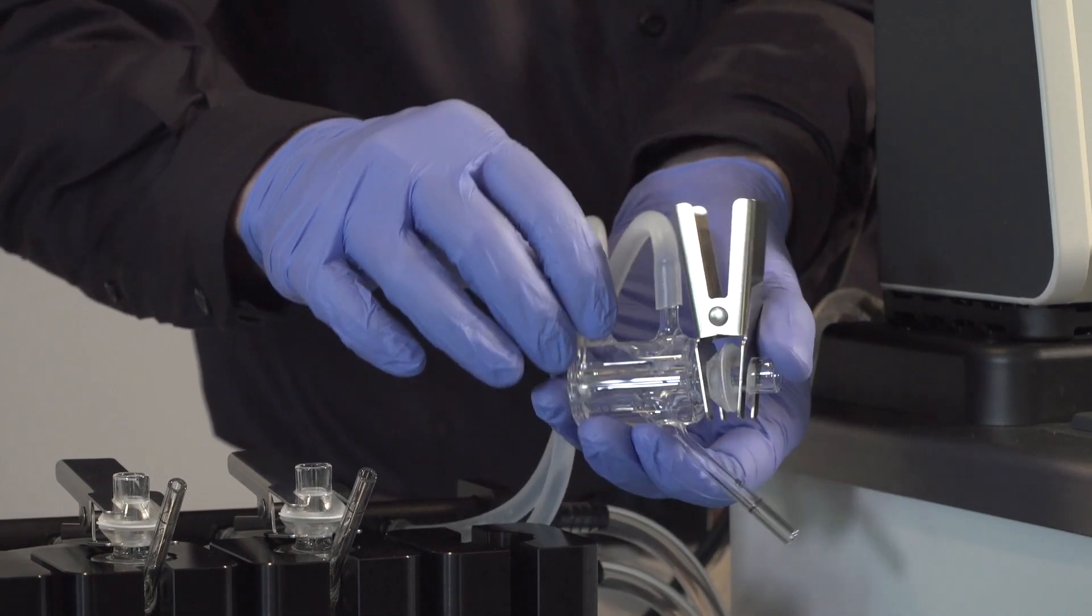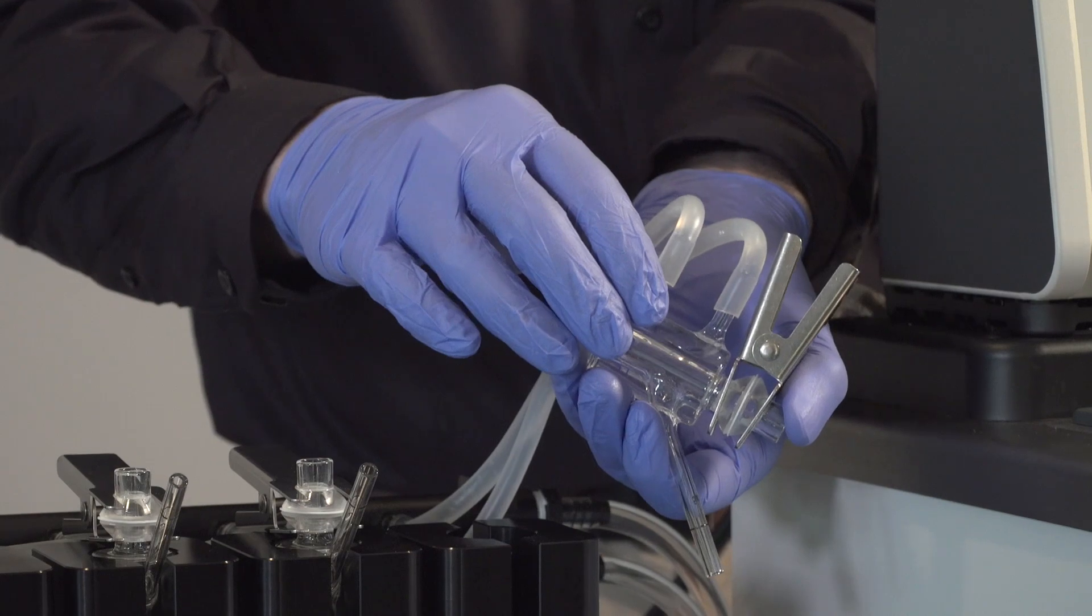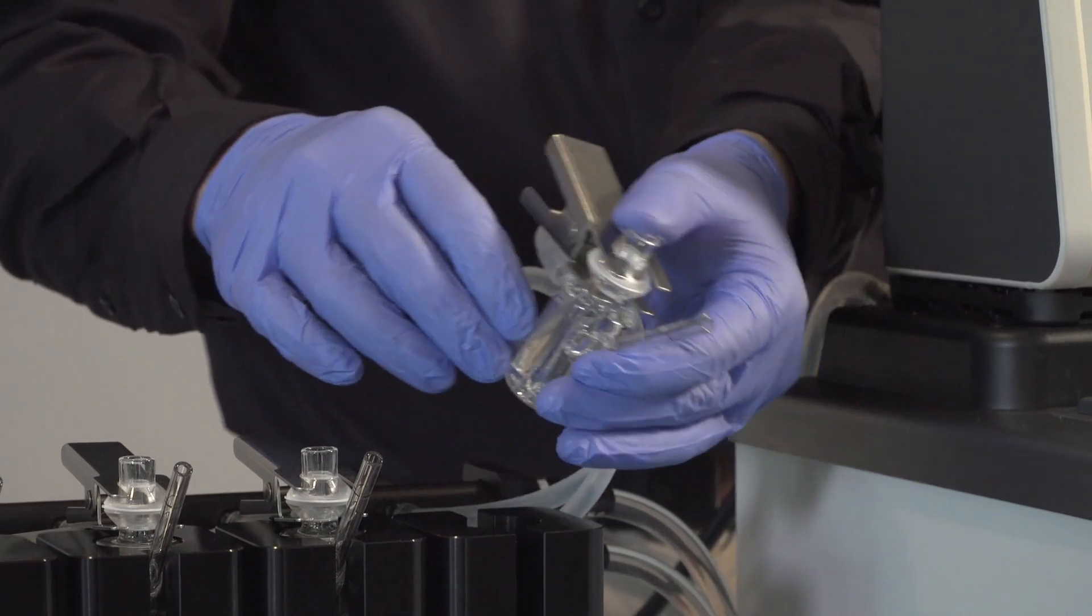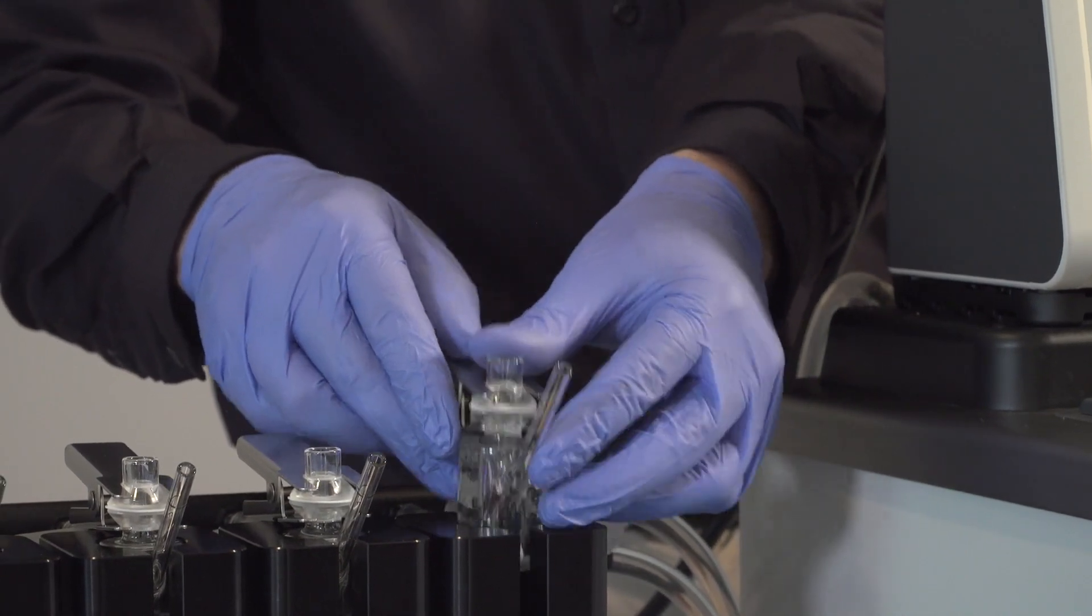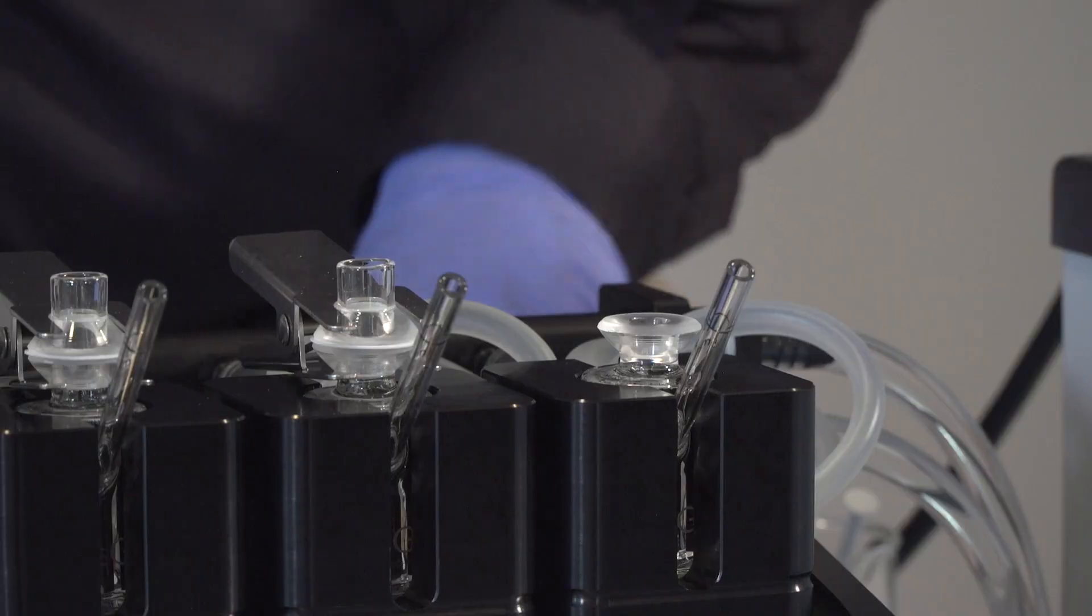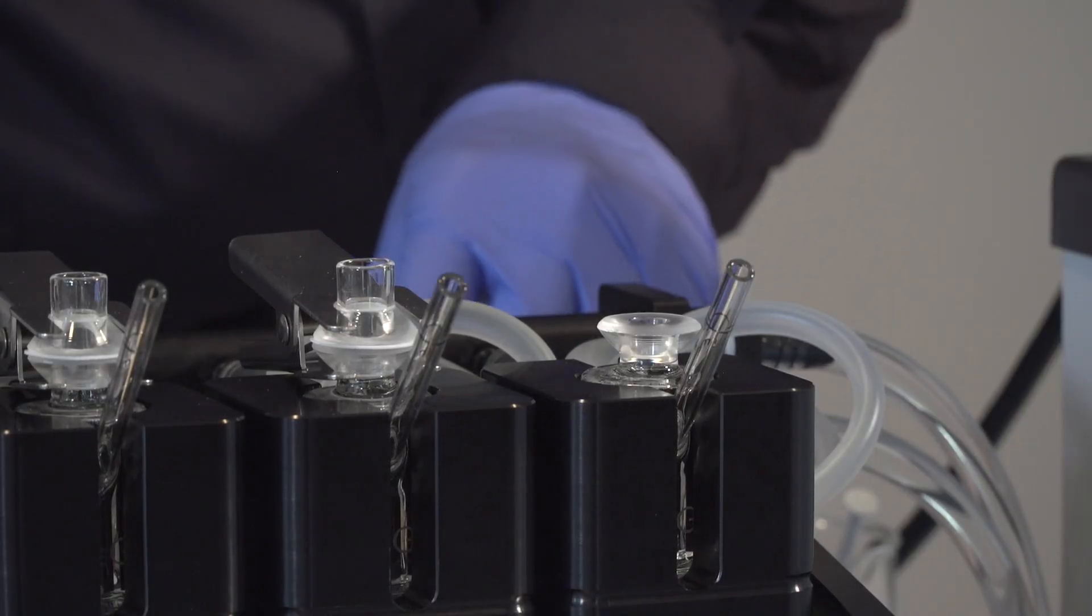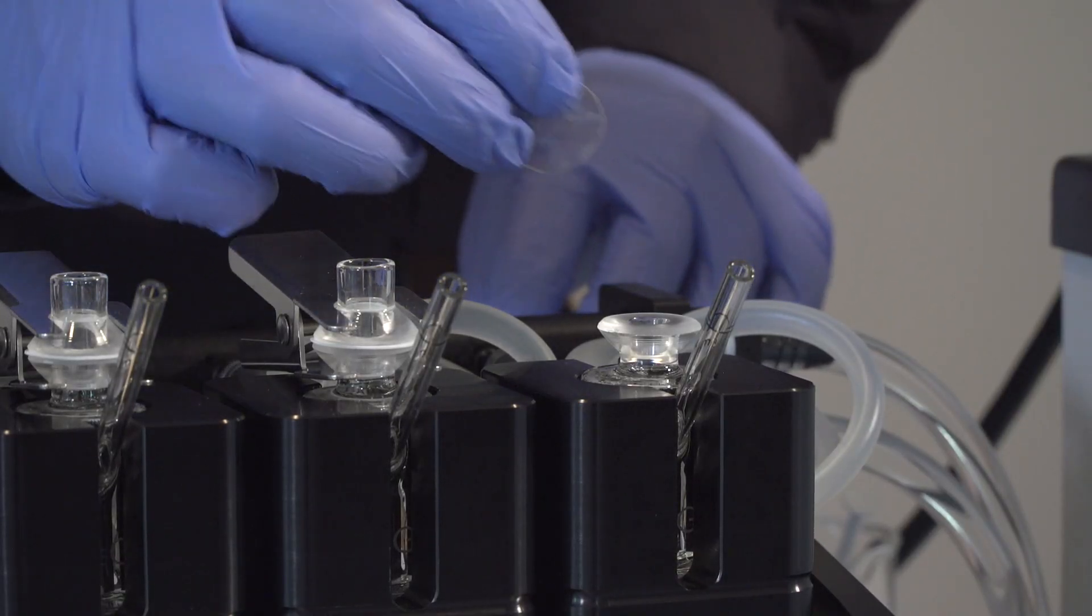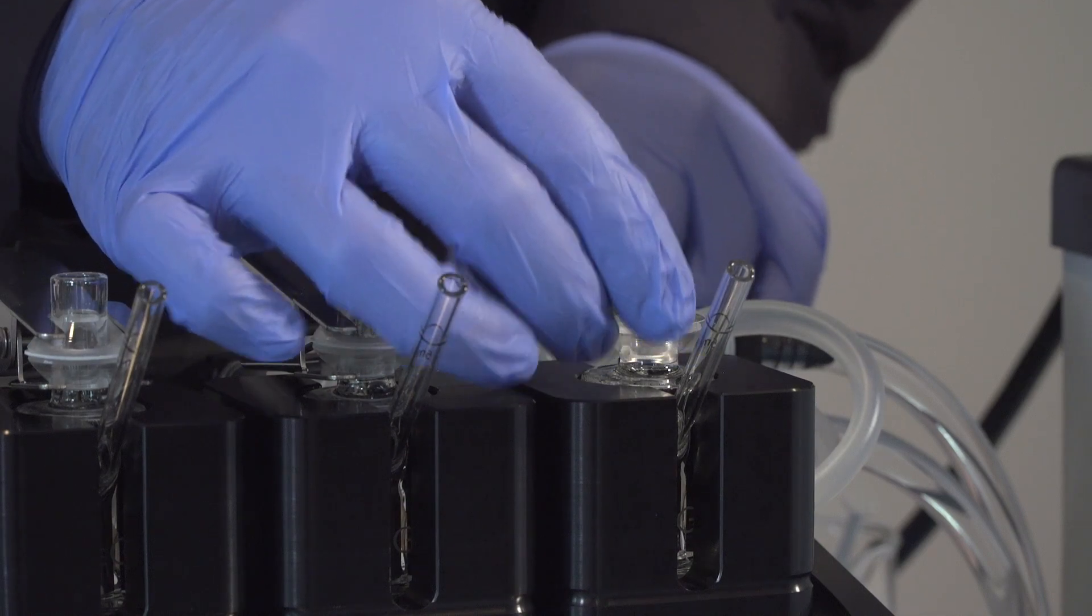When the bubbles have been removed from the water jacket, slide the cell into the stand. Place a membrane on top of the cell and secure it in place with the donor chamber in the clamp.